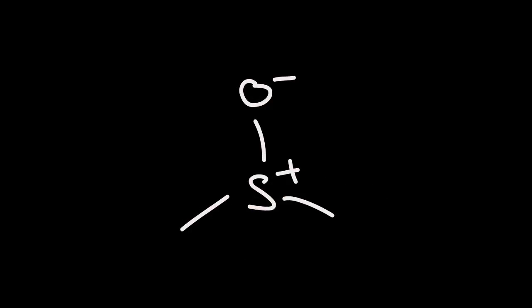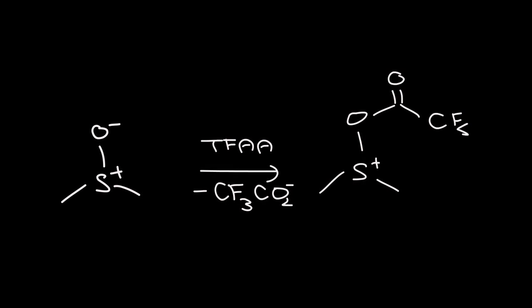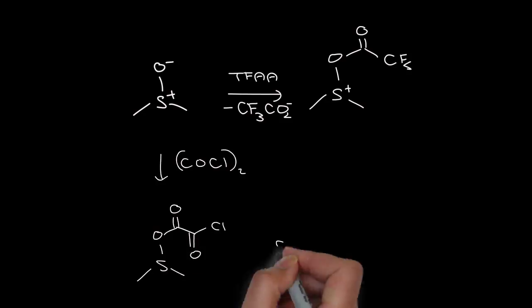Many of these reagents are derived from DMSO. The trick is to identify how the oxygen of DMSO is being turned into a leaving group. It could be reacted with trifluoroacetic anhydride to give a trifluoroacetate, or with oxalyl chloride to give a chloride.